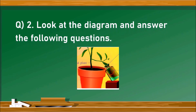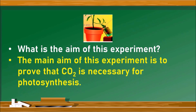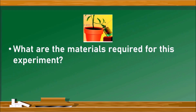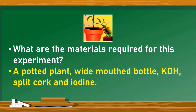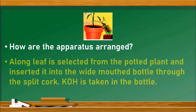The next is an experiment-based question. The aim of this experiment is to prove that carbon dioxide is necessary for photosynthesis. The materials required are: a potted plant, a wide-mouthed bottle, potassium hydroxide, a split cork, and iodine. The apparatus arrangement: a long leaf is selected from the potted plant and inserted into the wide-mouthed bottle through the split cork, with potassium hydroxide placed inside the bottle.